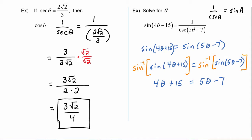Now it's a simple algebra problem. We subtract 4 theta from both sides, leaving 1 theta on the right, and we add 7 to both sides, giving us theta equals 22.